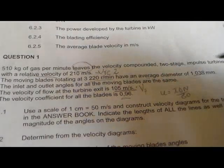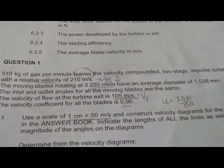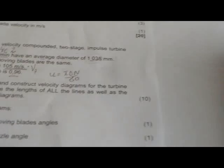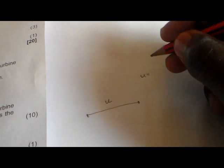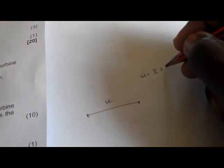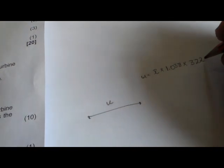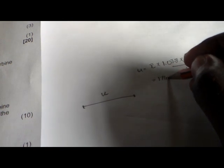We have a coefficient of friction of 0.9. Now they say we have to use a scale of 1 centimeter equals 50 meters per second. We are not given any of the angles. So we have to draw our initial velocity. Our initial velocity — we are given the rotation. So U = π × D × N = π × 1.03 × 310 / 60, which gives us approximately 174.5 meters per second. So this is our initial velocity.